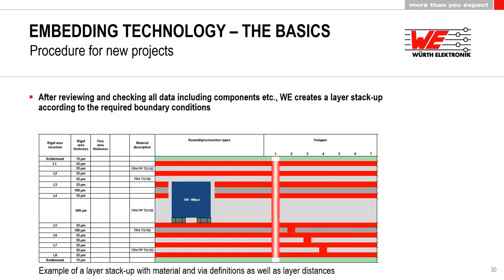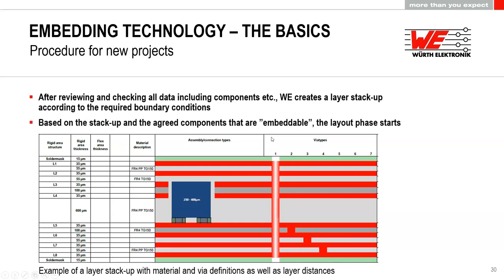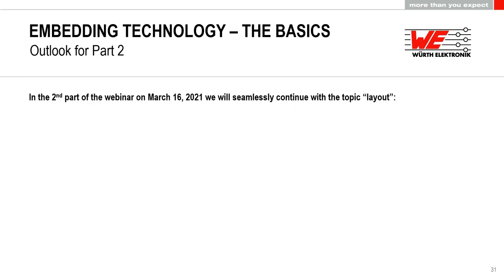After reviewing all data — components, assembly, and layer requirements — a full layer stackup proposal is created, fitting all requirements including layer distances, via configurations, and component placement layers. In some cases, cutout cores may be needed for very thick components. With the stackup agreed upon and the components confirmed for embedding, the layout phase can begin. Part 2 of this webinar series is planned for March 16th, 2021.